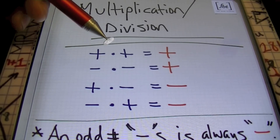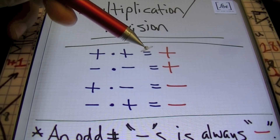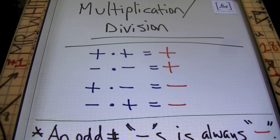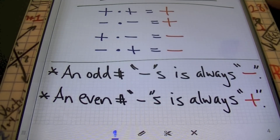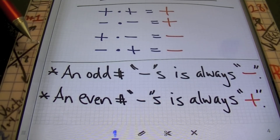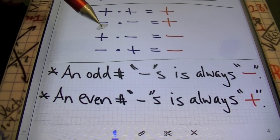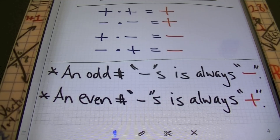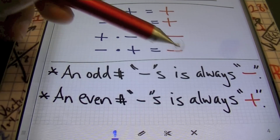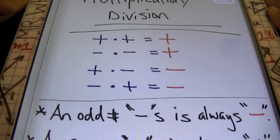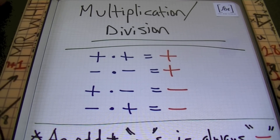Keep in mind that a positive times a positive will be a positive result. A negative times a negative is a positive result. A positive times a negative is a negative. And a negative times a positive is a negative. You can summarize that like this: an odd number of negative signs when you're multiplying and dividing is always negative. Anytime you have an even number of negative signs, the answer will always be a positive result. So you can just count the number of negative signs to determine the sign of the answer.